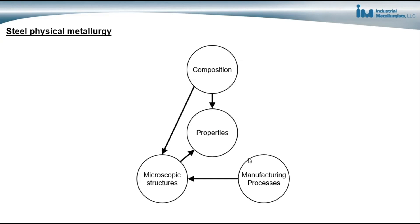And finally, there are the manufacturing processes that are used on the metal. The manufacturing processes combined with the composition influence these microscopic structures. So by understanding composition and microscopic structures and manufacturing processes and their influence on the properties, we're able to design manufacturing processes that produce the metal with the properties we want. We're also able to engineer components by selecting the materials and processes in order to get the desired properties.